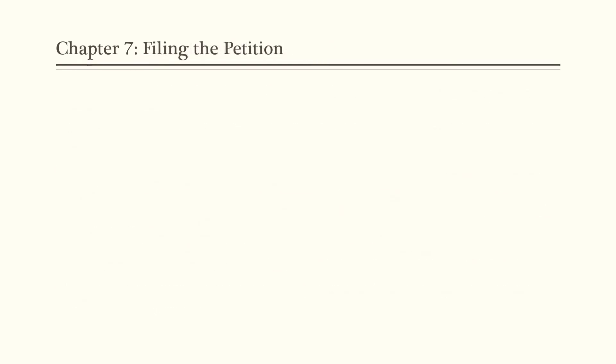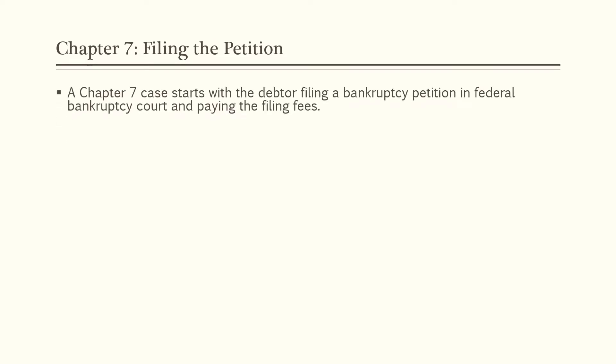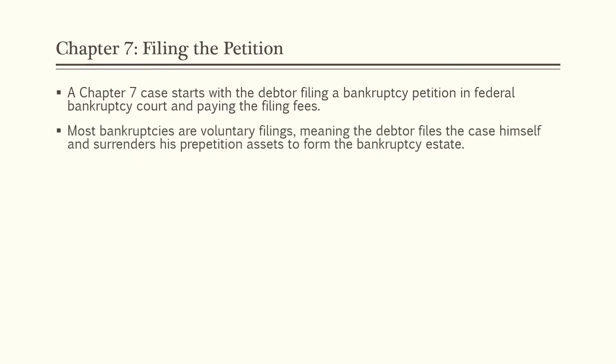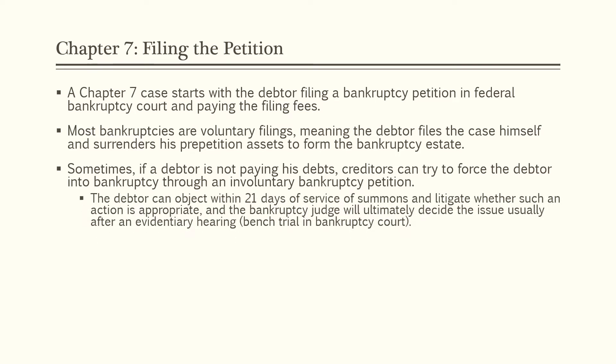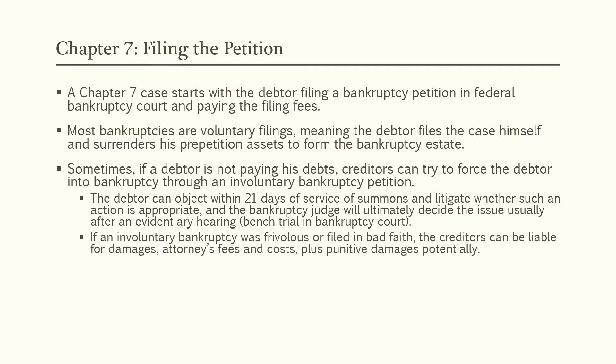A Chapter 7 case starts with the debtor filing a bankruptcy petition in federal bankruptcy court and paying the filing fees. Most bankruptcies are voluntary — the debtor files itself and voluntarily surrenders pre-petition assets to form the bankruptcy estate. Sometimes, if a debtor is not paying debts, creditors can force the debtor into bankruptcy through an involuntary bankruptcy petition. The debtor can object within 21 days of service of summons and the bankruptcy judge will decide the issue, usually after an evidentiary hearing. If an involuntary bankruptcy was frivolous or filed in bad faith, the creditors can be liable for damages, attorney's fees, costs, and potentially punitive damages.